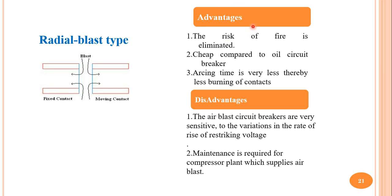The main advantages of air blast circuit breakers are that the risk of fire is eliminated as the medium is air, they are cheaper compared to oil circuit breakers, and arcing time is very less, thereby causing less burning of contacts. The disadvantages are that air blast circuit breakers are very sensitive to variation in the rate of rise of restriking voltage, and maintenance is required for the compressor plant which supplies the air blast and must keep air at high pressure.